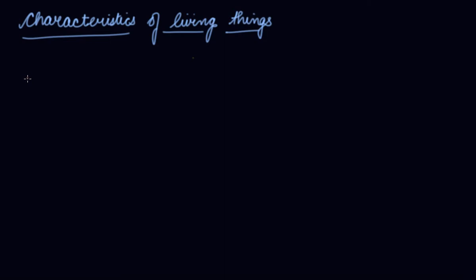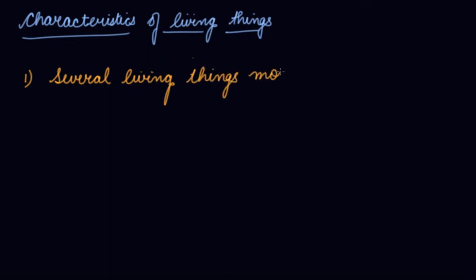There are various characteristics of living things. Several living things move. Plants do not move from one place to another, whereas animals move from one place to another. They move around in search of food or shelter or to escape from enemies.